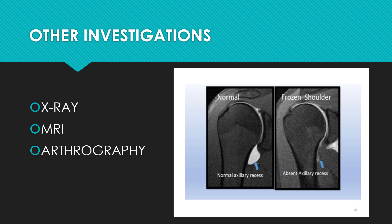In MRI, the key point is the axillary recess. The axillary recess is a pouch in the inferior aspect of the joint, beneath the inferior glenohumeral ligament. In frozen shoulder, when there is inflammation and fibrosis, this pouch is comparatively reduced or absent. Normally the pouch appears clearly, but in an inflammatory condition it gets reduced or disappears — this is the main key finding in MRI.